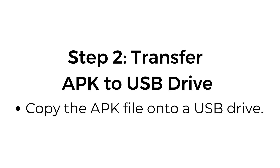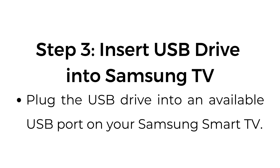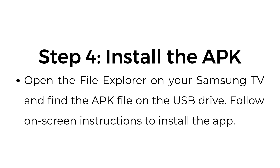Step number two, transfer the APK to a USB drive. Copy the APK file onto a USB drive. Step number three, insert the USB drive into your Samsung TV. Plug the USB drive into an available USB port on your Samsung Smart TV. Step number four, install the APK. Open the file explorer on your Samsung TV and find the APK file on the USB drive.